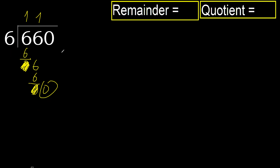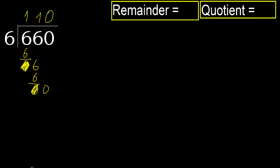0 is less, therefore next there is no number, therefore finish. Always complete with 0 — complete because here we finish it with this number.